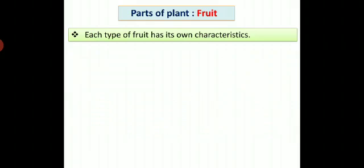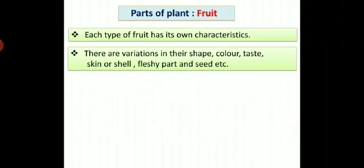Next part of the plant is fruit. Each type of fruit has its own characteristics. There are variations in their shape, color, taste, skin or shell, fleshy part, and seed.